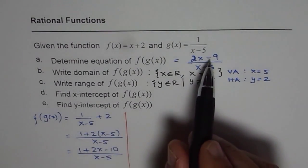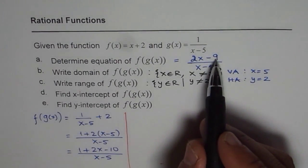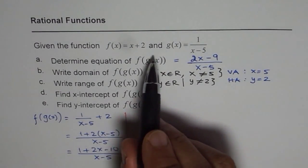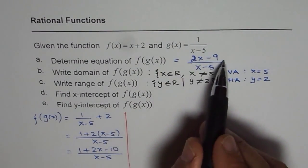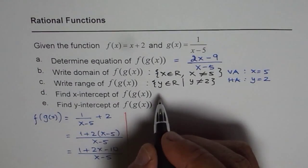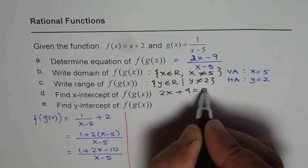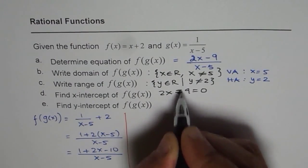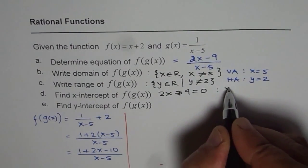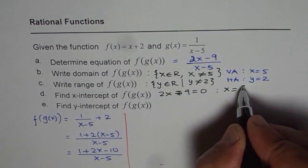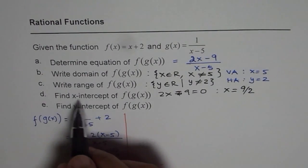Find x-intercept of this function. x-intercept is when the value of the function is 0 or the numerator is 0. So to find x-intercept, we will equate the numerator to 0. Sorry, this is 9 minus. So we get x equals 9 over 2. So that is the x-intercept.